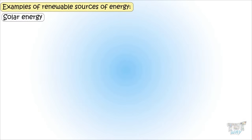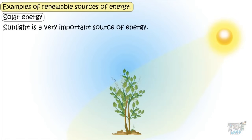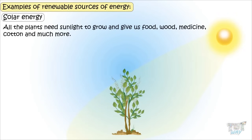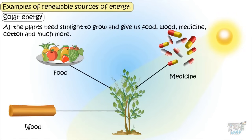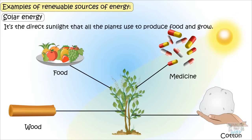Solar energy is a very important source of energy. All the plants need sunlight to grow and give us food, wood, medicine, cotton, and much more. It's the direct sunlight that all plants use to produce food and grow.